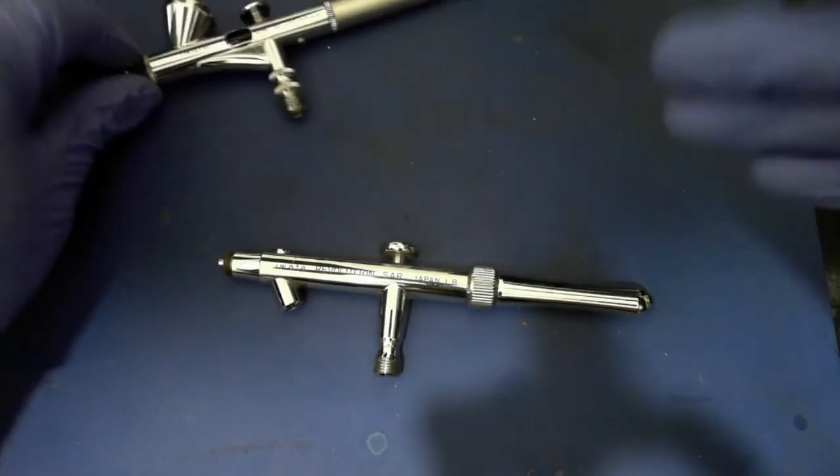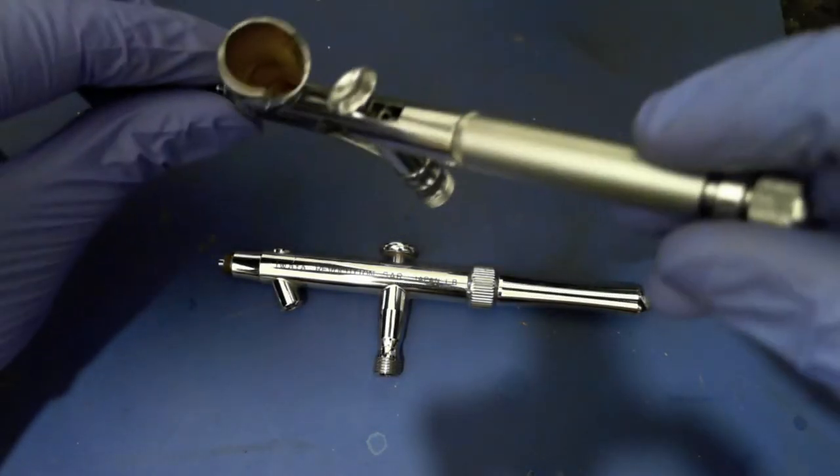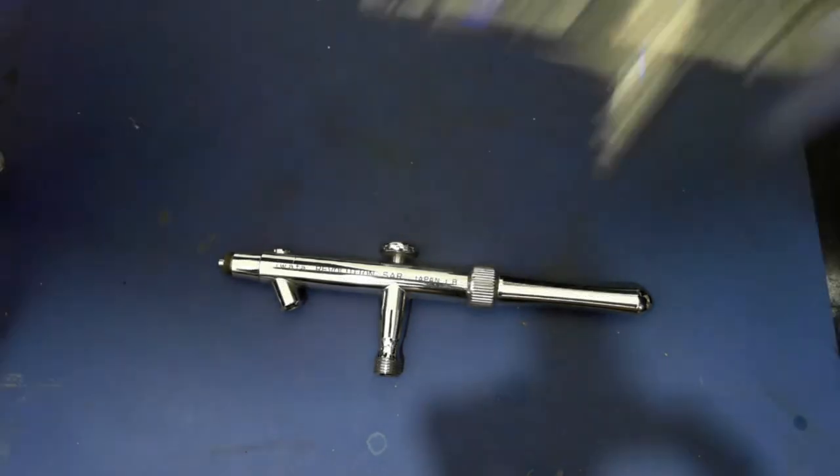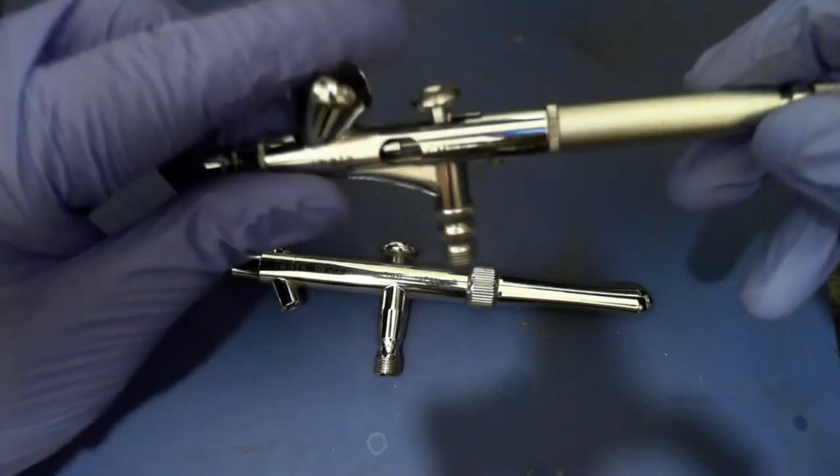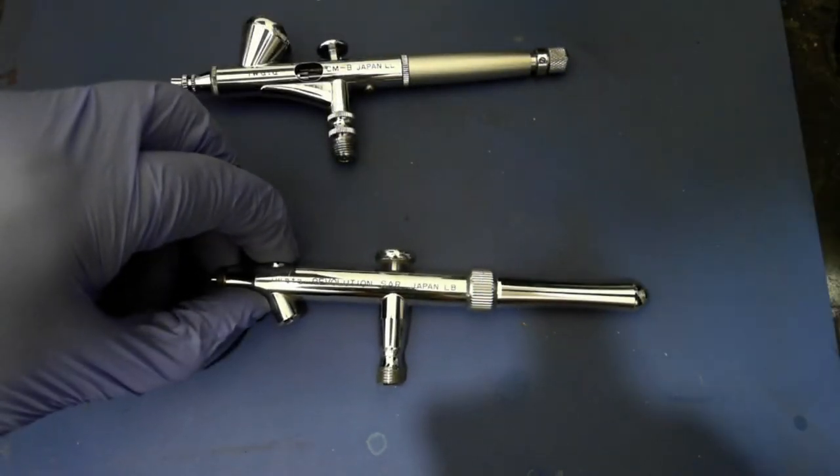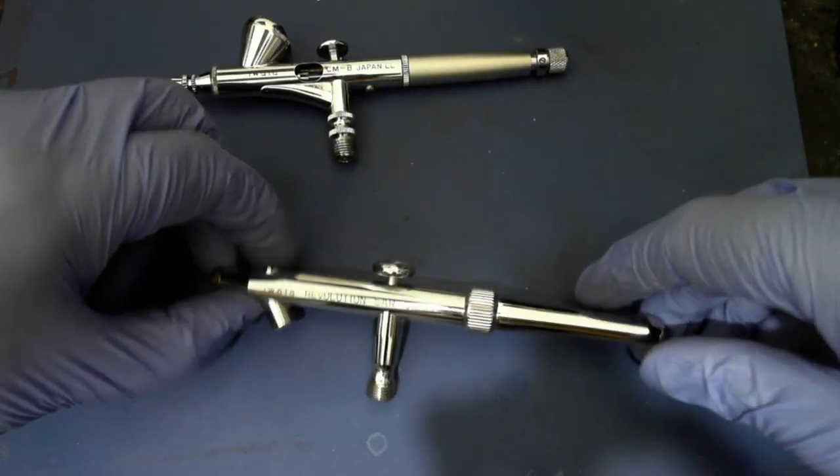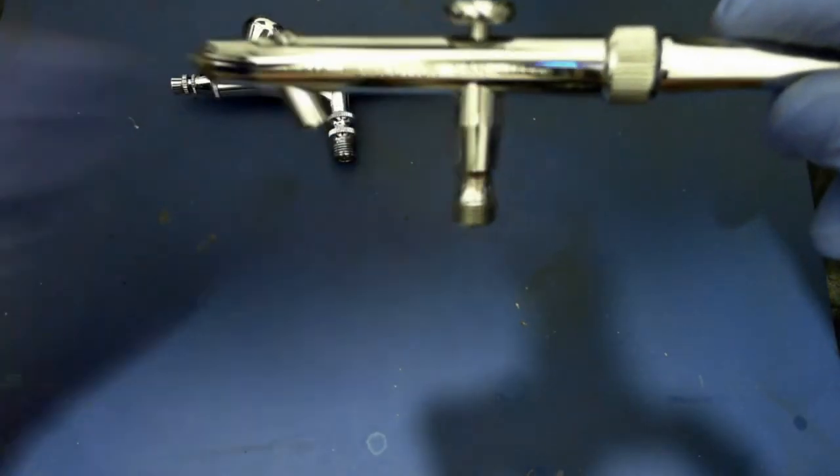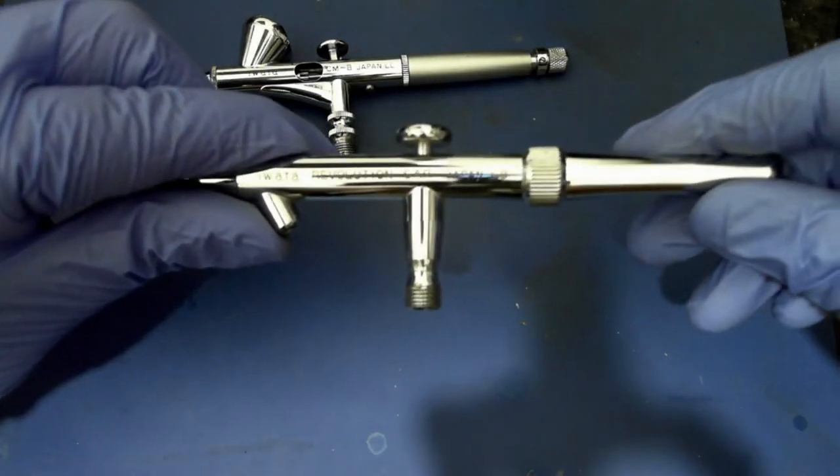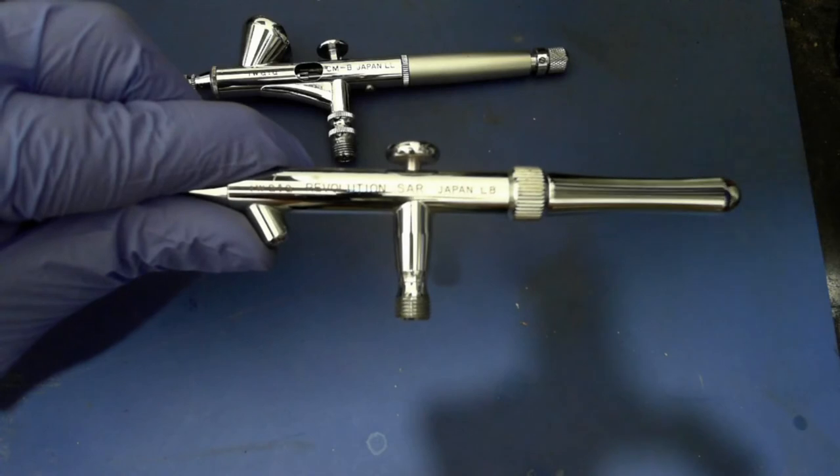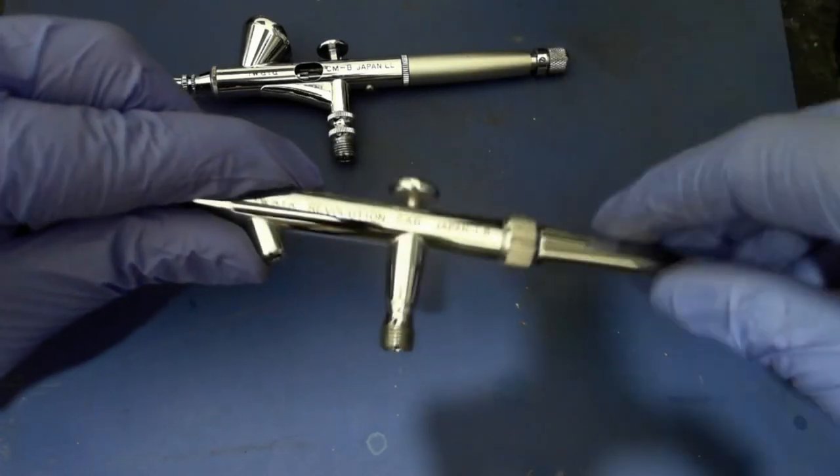The best choice for modelers is this one—the gravity feed system—because you don't need a lot of paint for miniatures. If you want to do more artistic work like paintings or walls, this is the kind that you have to use—bottom feed, more paint, and you can have the premixed colors ready to use.